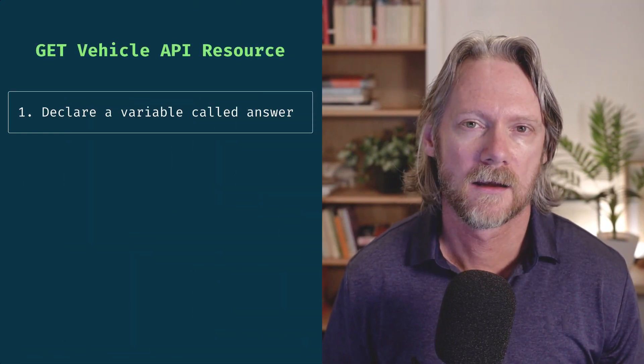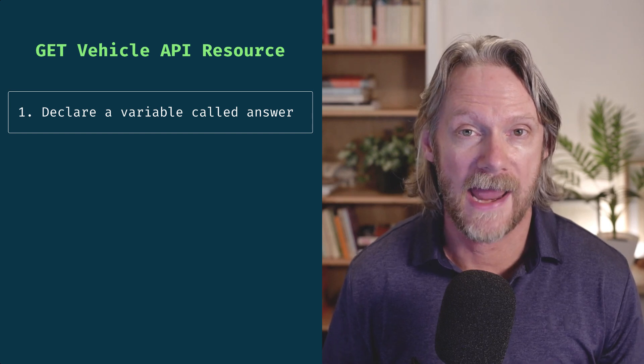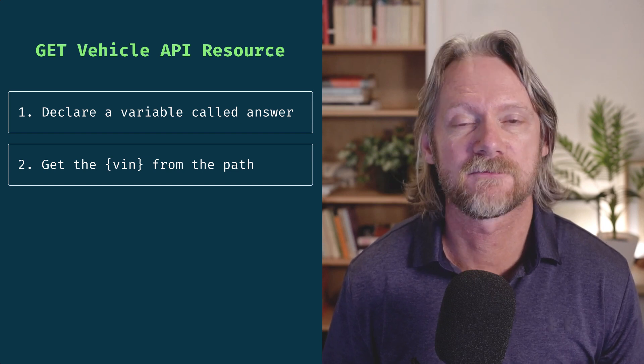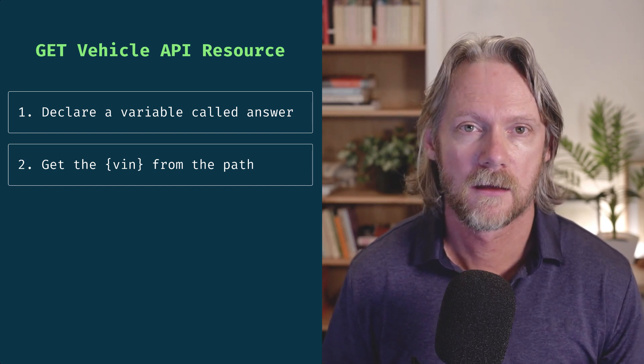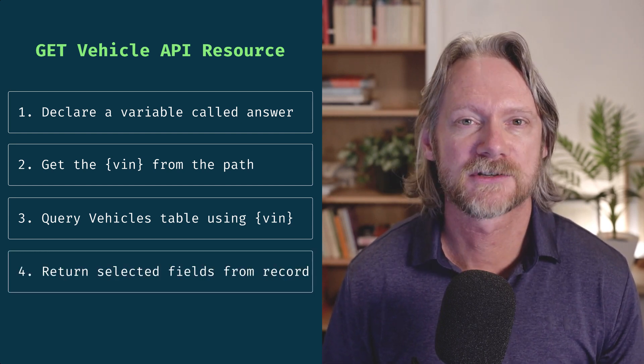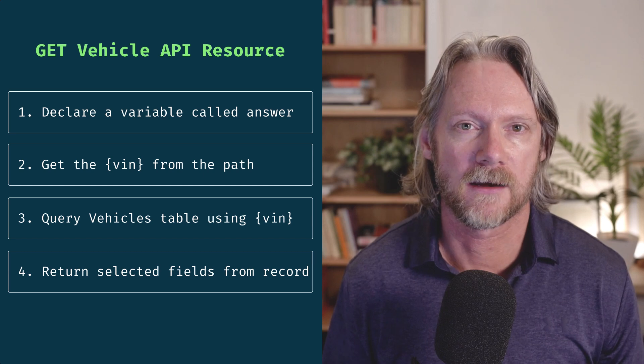Before we start creating our script we need to know what we want to do with it, so let's refresh our memories of the API we created in that series — specifically the resource to query the vehicles table with a VIN and return specific fields from the record. Our API will: one, declare a variable called 'answer' to save the response; two, obtain the VIN parameter from the path; three, use the VIN to query the vehicles table; and four, return certain fields from the record found.